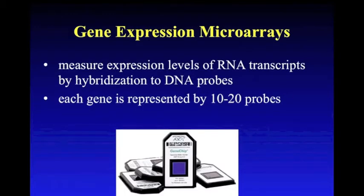Differential expression has become popular with the development of microarray technology. In these experiments, RNA transcript levels are determined by hybridization to a microarray of short DNA probes. Genes are represented by 10 to 20 probes on the array. From the signal intensities of these spots on the array, the expression level of the gene can be determined. But these values aren't particularly interesting on their own — it is most interesting to look at differences between expression levels in different samples.